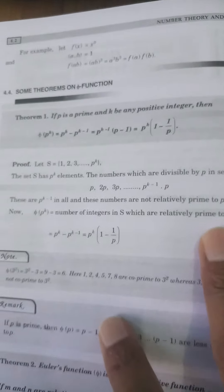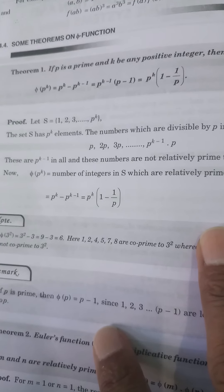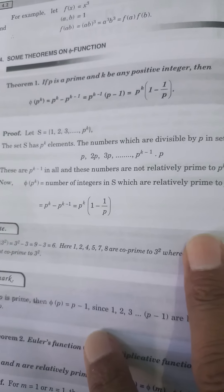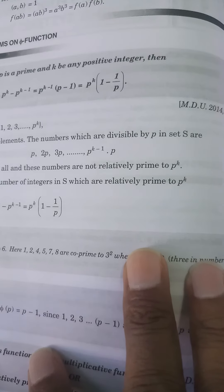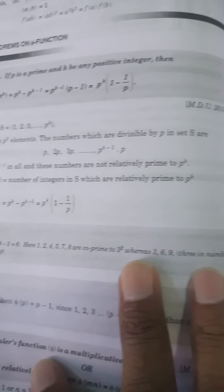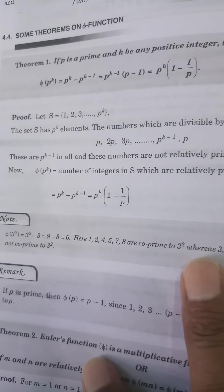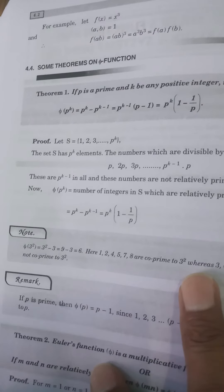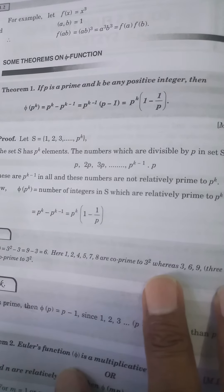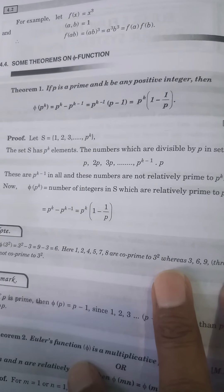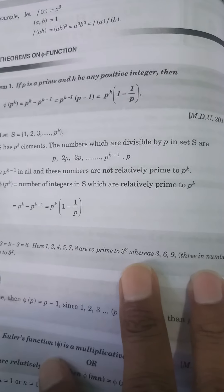Proof: Let S = {1, 2, 3, ..., p^k}. The set S has p^k elements. The numbers which are divisible by p in set S are: p, 2p, 3p, ..., p^(k−1)·p. These are p^(k−1) in all, and these numbers are not relatively prime to p^k.